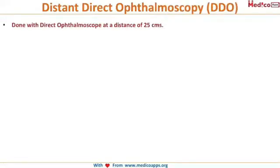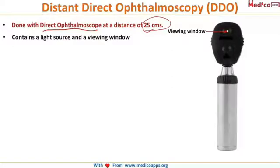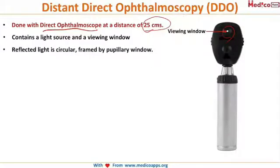Distant Direct Ophthalmoscopy (DDO) is performed with an instrument called the direct ophthalmoscope at a distance of 25 centimeters. This distance is important to remember. The instrument contains a light source and a viewing window through which the ophthalmologist looks at the eye. The reflected light, unlike the retinoscope which produces a streak, is circular in shape and framed by the pupillary window.